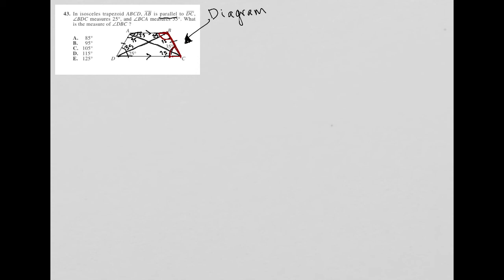It tells us that BDC is 25, so we had already peeped that out, and then BCA is 35, so we'd already checked that out. What is the measure of angle DBC? So where's DBC? Let's use a different color - D, this is green, D to B to C, perfect, which means we're looking here. So that's 95.